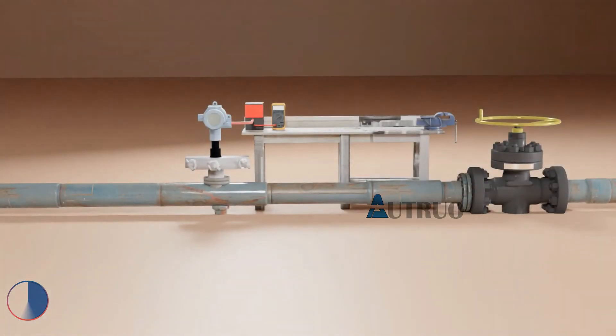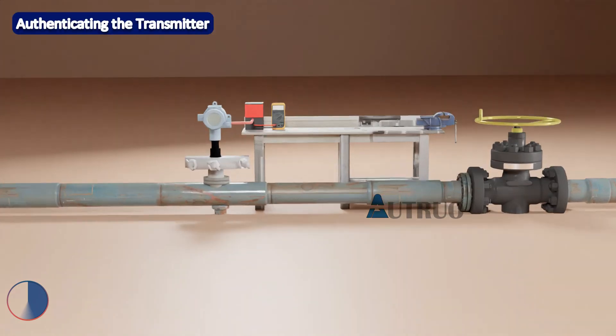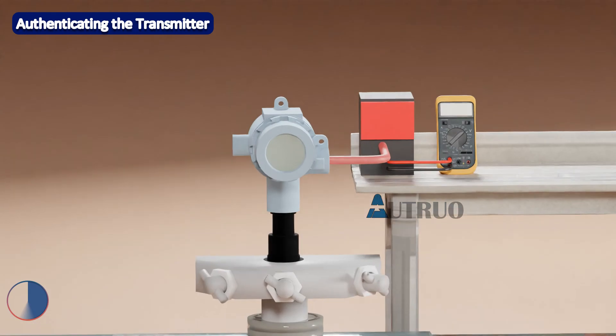We will mount the transmitter on the process pipe. Now let's authenticate the calibrated transmitter. All the valves will be at closed conditions. We will now open the equalizing valves. We will also slowly open the high pressure valves, after which we will close the equalizing valves and open the low pressure valves.